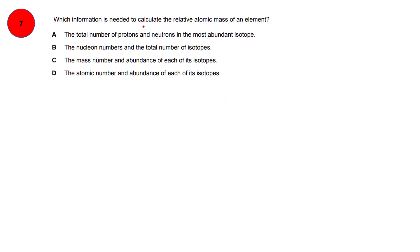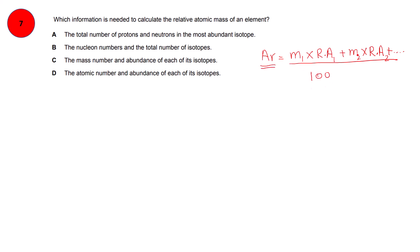Question number 7. Which information is needed to calculate the relative atomic mass of an element? The formula for relative atomic mass is: (mass of first isotope × relative abundance of first isotope + mass of second isotope × relative abundance of second isotope + ...) divided by 100. So you need two things: the mass of each isotope and the relative abundance of each isotope. Option C is correct — the mass number and abundance of each of its isotopes.